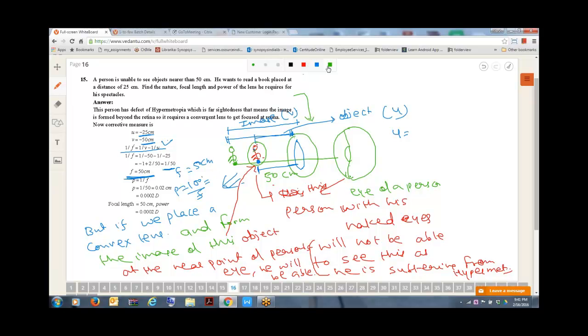Power will be 100 by F, that will be 100 by 50, that will be 2 diopter. As you can see, the power is coming as positive. If power is coming as positive, that means we already know that this has to be a convex lens.